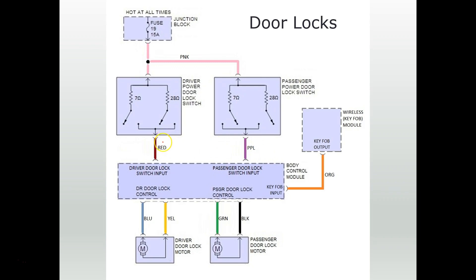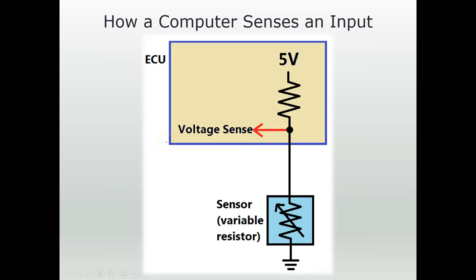Here's an example of door locks — the door lock motors are controlled by the body control module, and the input is the door lock switches. When one of the driver's door lock switches closes, it sends a signal. Is this a pull-up or pull-down circuit? Looking at the other end of the circuit, it comes from a voltage source — 12 volts. Because we have 12 volts there, we know the other end needs a resistor and a ground with a sensing element, so this is a pull-down circuit. The computer can tell when either the lock or unlock switch is pressed. That's how a basic computer input circuit works — understanding this lets you diagnose circuits accurately by knowing what voltages to expect.